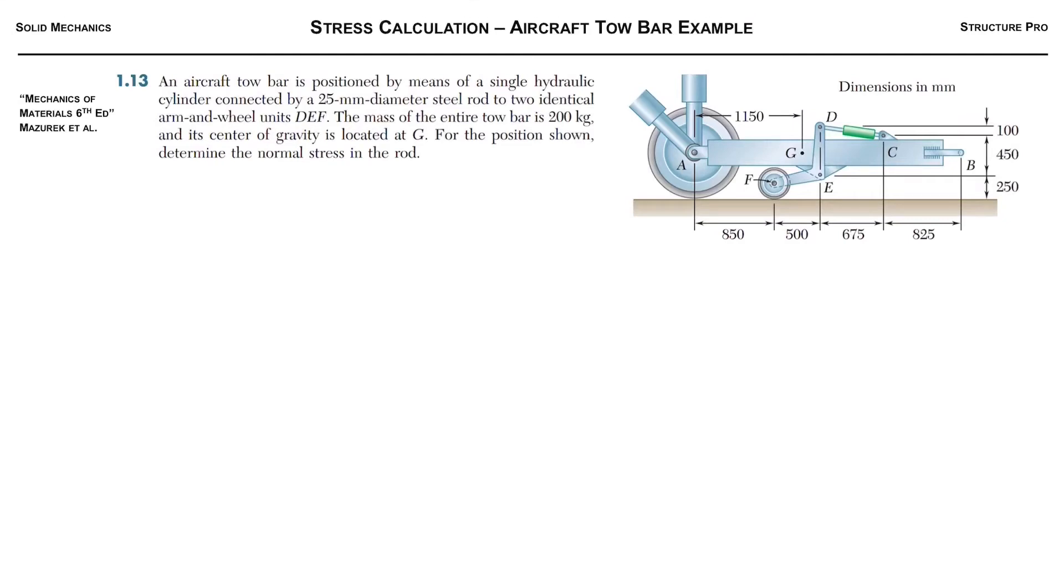All right everyone, today we're going to be calculating the stress on this aircraft tow bar, so that's this little thing here which is used to pull an airplane. Basically we got a single hydraulic cylinder here, 25 millimeters in diameter, and then the arm and wheel units.